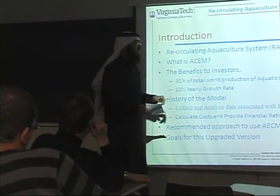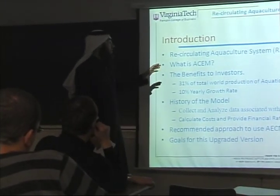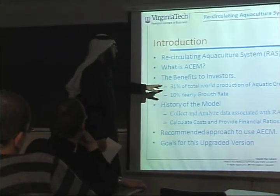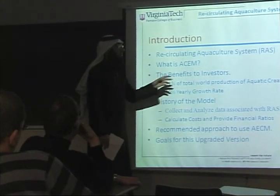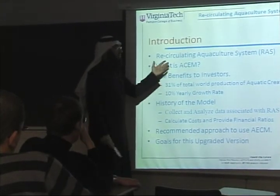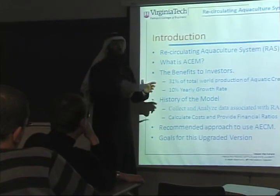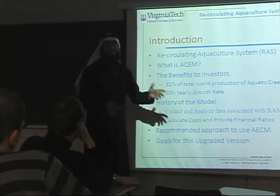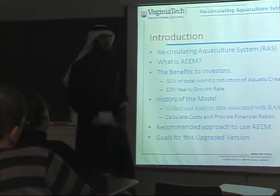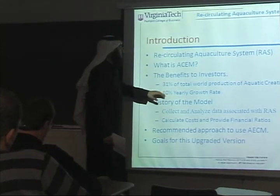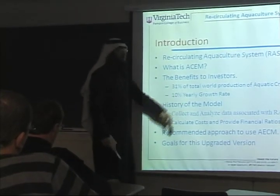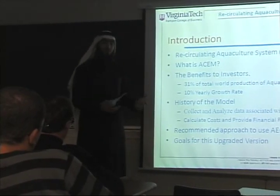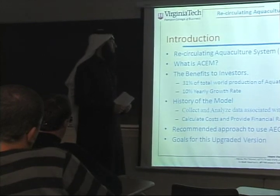This model focuses on what investors need to know. Why is this really important? 31% of total world production of aquatic creatures comes from these systems, meaning roughly 31% of what you eat at restaurants comes from these systems. Investors should expect a 10% yearly growth rate of fish production, which is why this model is really important for interested investors.